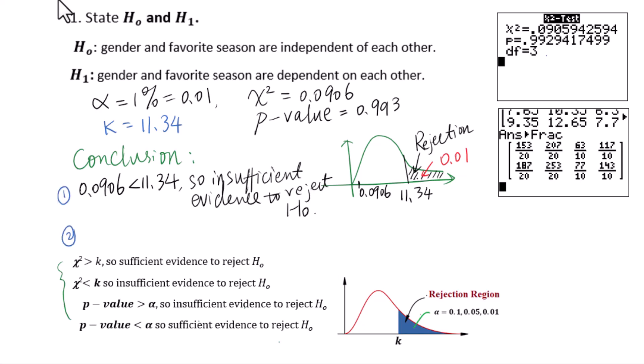The second way to draw the conclusion is to use p-value and significance level. The p-value is 0.993, which is greater than the shaded area. In other words, it's outside the rejection region: 0.993 is greater than 0.01. So there is insufficient evidence to reject H0.